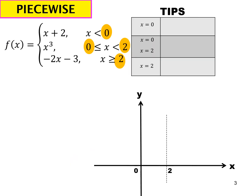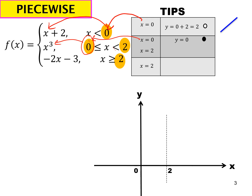For the first part, x plus 2: substitute x equals 0, you get y equals 2. This gives an open circle. For the second part, x cubed: when x equals 0, substitute to get y equals 0, which is a closed circle.